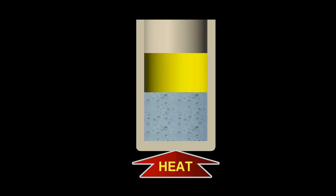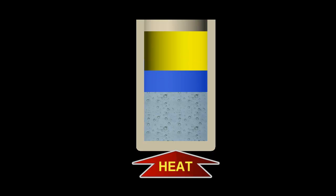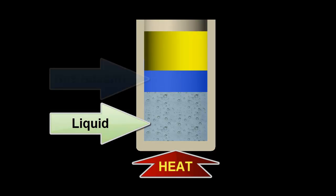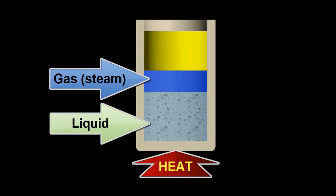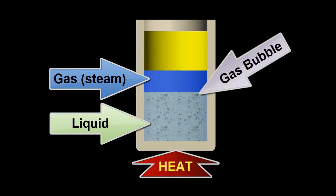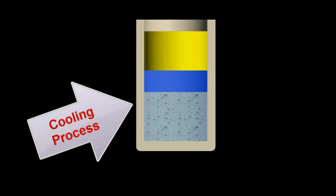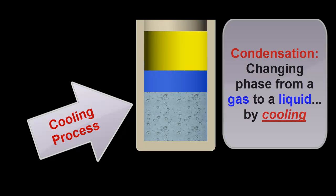As I start the animation, we can see that the expanding steam in the system raises the piston, as expected. Notice that our system contains a liquid — water — a gas, the steam or water vapor, and also these bubbles that are in the process of transitioning from a liquid to a gas, exactly as we saw in the vapor pressure graph. In the next step of the animation, I'll turn off the heat to allow the water to cool. Notice that the gas bubbles will return to their liquid state. This process of changing phase from a gas to a liquid by cooling is known as condensation.